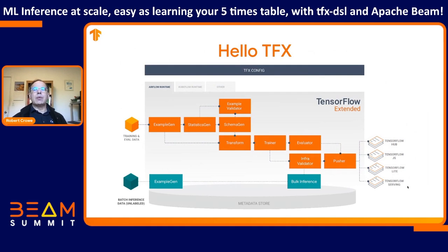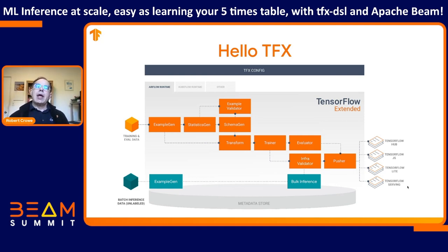This is the hello world of TFX. The components in orange are a training pipeline — they take a training data set as input and produce a trained model as output. In green is an inference pipeline, where you use TFX to run batch inference against data you want to generate results from. To do that, you first ingest unlabeled data, then use a component called bulk inference, which takes a trained model and runs inference.